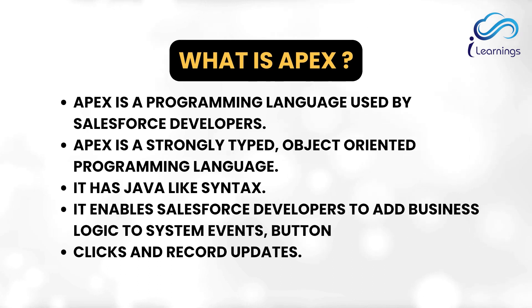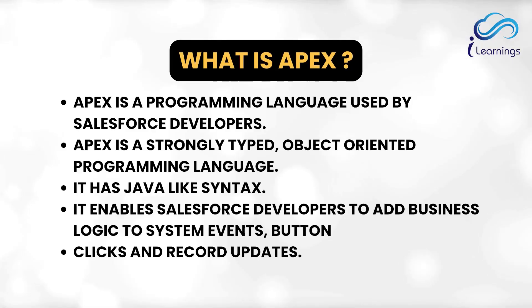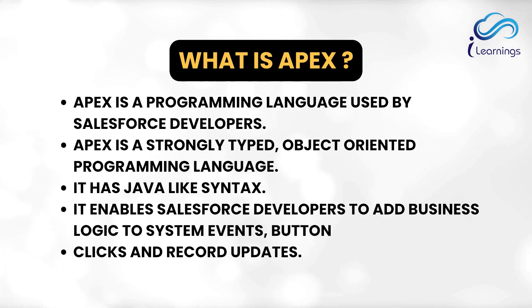Apex is a strongly typed language, meaning a variable cannot exist without a data type. It is also an object-oriented programming language — everything is in classes, and you can include variables and methods in classes and access them whenever needed. Apex is very similar to Java; most of the syntax is derived from Java, so if you know Java you can understand Apex easily.